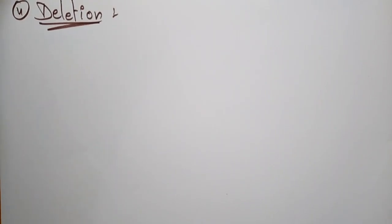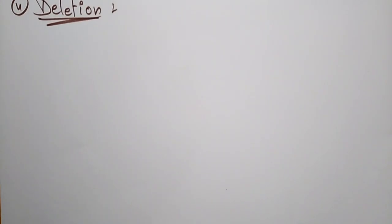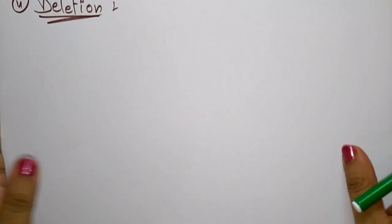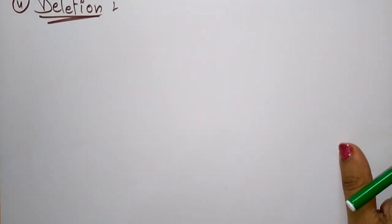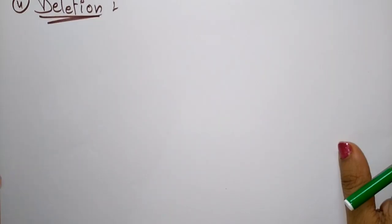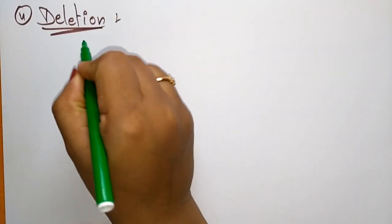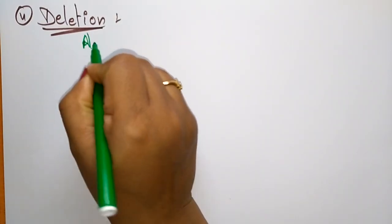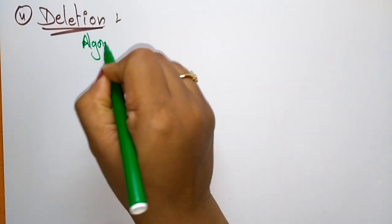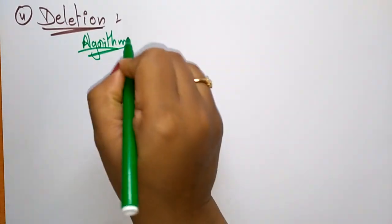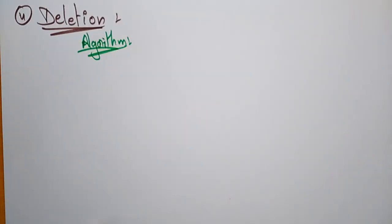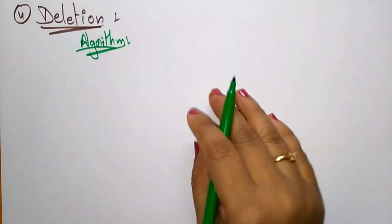Hi students, welcome back. Let us continue with the binary search tree operations. So far we have discussed traversing, searching, and insertion. Now coming to the fourth basic operation, that is deletion. First let me explain the algorithm, and afterwards I'll take one example to explain how to delete an element in a binary search tree.